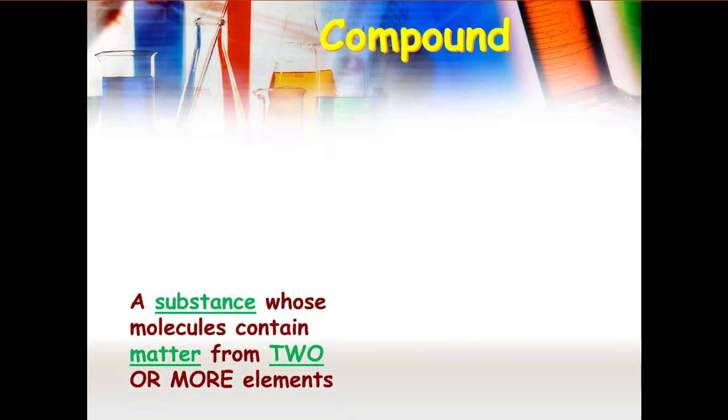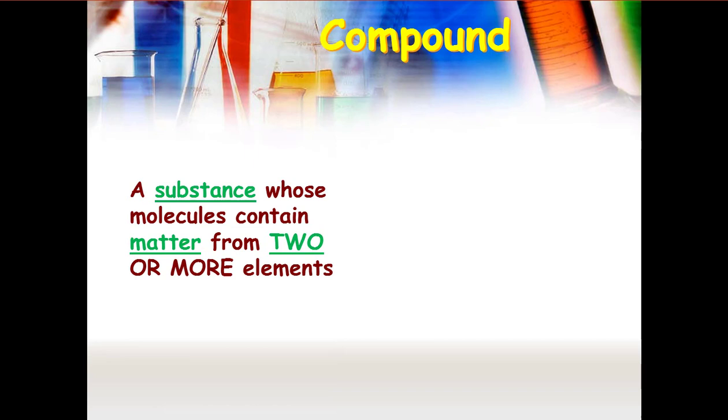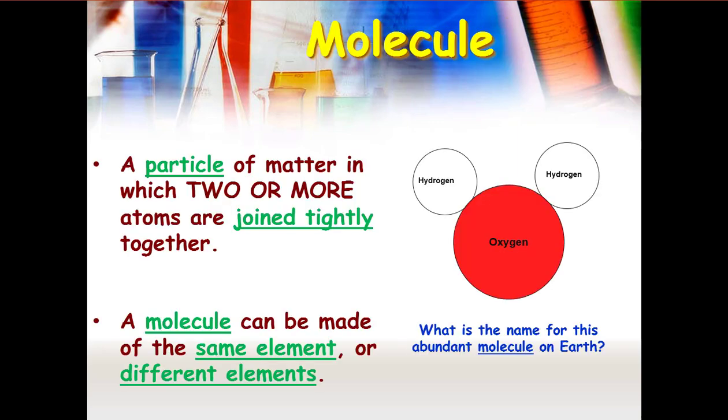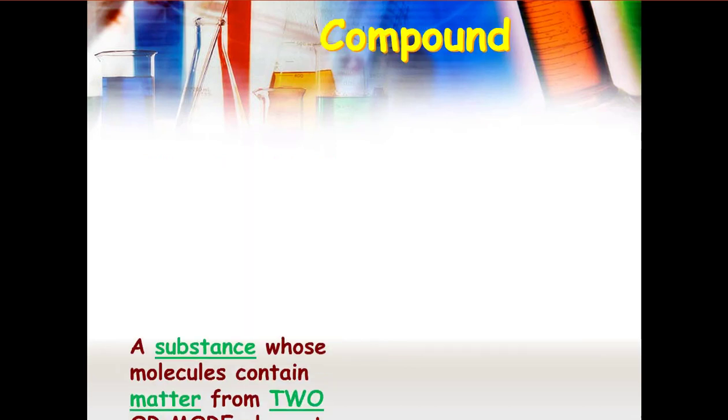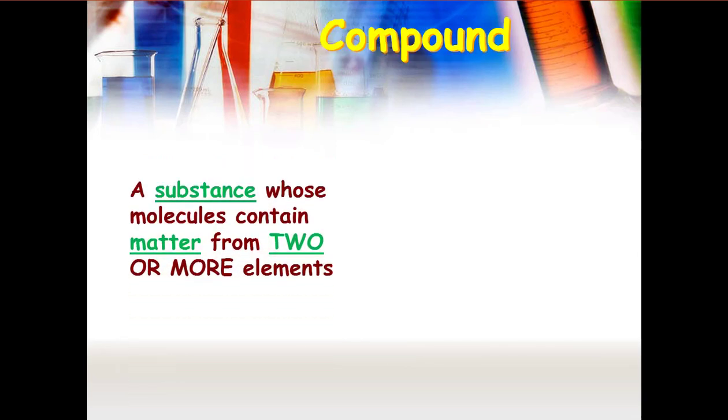Now a compound is a substance whose molecules contain matter from two or more elements. Two or more elements, that's a compound. As it has two or more atoms. Compound has two or more elements that are different.